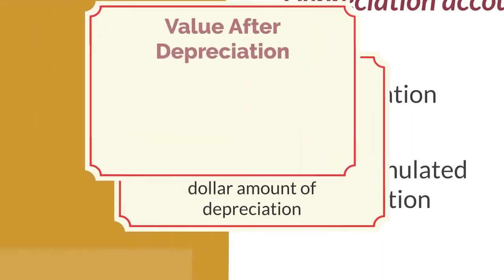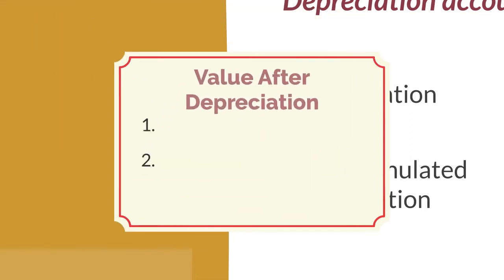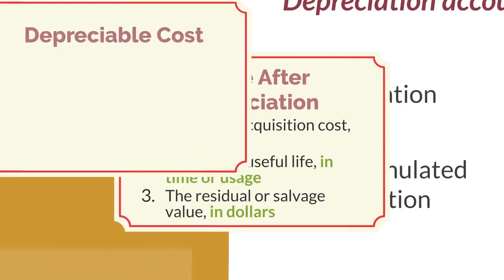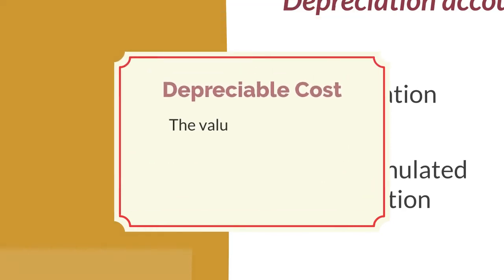To calculate asset value after depreciation, we will need three things. The initial acquisition cost in dollars. The asset's useful life in units of time or usage, for example years or units of activity, and the residual or salvage value in dollars, which represents the asset's value at the end of its useful life. With this information, we know the depreciable cost, or the value that an asset loses over its useful life, which is acquisition cost minus residual.